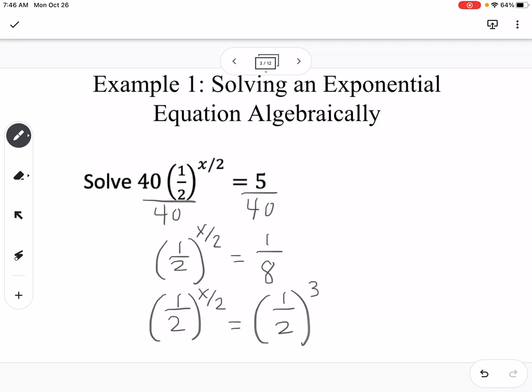Now by our one-to-one properties, we know that since the bases are the same, the exponents have to be the same, which means x over 2 has to equal 3. We can multiply both sides by 2, so x equals 6.